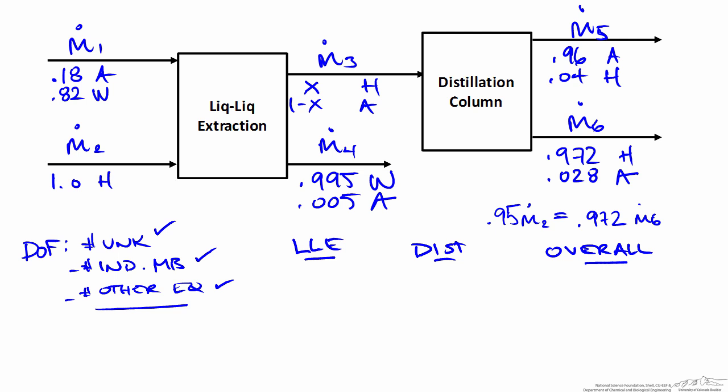Starting with the liquid-liquid extraction column: we count the unknowns as m1, m2, m3, the composition variable x, and m4 — five unknowns total. The number of independent mass balances equals the number of species: acetic acid, water, and hexanol gives us three independent balances. The total balance is the sum of the species balances so it is not independent. With no other relating information, 5 minus 3 gives 2 degrees of freedom, so we need more information.